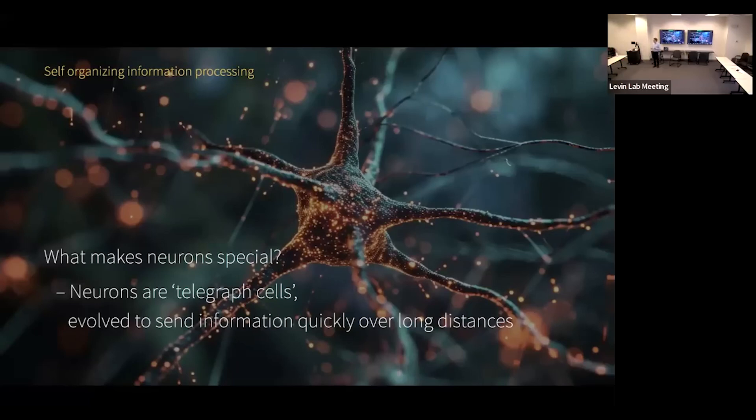Once you evolve telegraph cells to move your muscles very fast to compete with other animals at a high metabolic cost, you also need to do perception and decision making at the same rate. So you build an information processing system out of telegraph cells. This telegraph network is able to make sense of reality and control the organism very quickly.